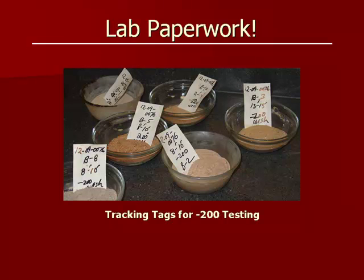Another area where the lab technician spends a lot of time is creating tracking tags for Atterberg limit testing, minus 200 testing, and unit dry weight testing. The soil samples have to be split to be sent to different stations for different types of tests, and once split, you have to track what boring and depth each sample came from. The tracking tag shown on the left indicates the project number, boring number, depth zone, and the individual test to be run — all of this paperwork created even before putting anything on the scale.